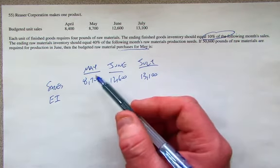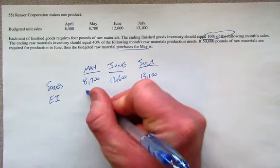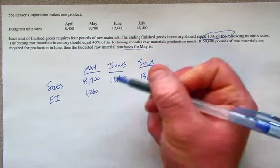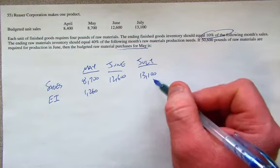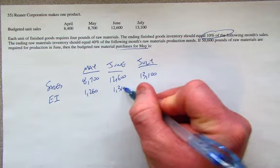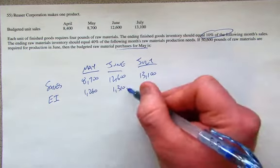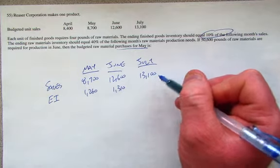That's our ending inventory requirement. So for the month of May, we're going to have an ending inventory of 1,260. That's simply 10% of 12,600. And for the month of June, we plan to end with 1,310 items in inventory. That's 10% of July's 13,100 sales budget.